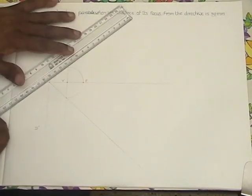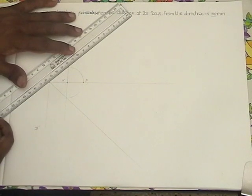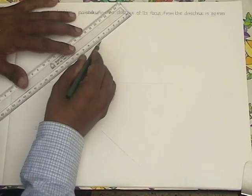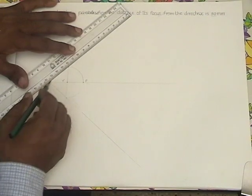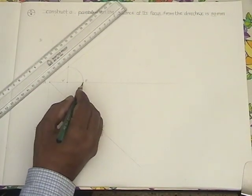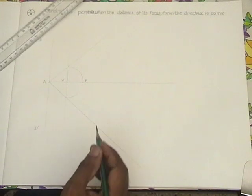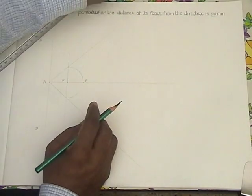Then draw another directing line at the top. Remember, the vertex should be at the center of AF because eccentricity is 1.